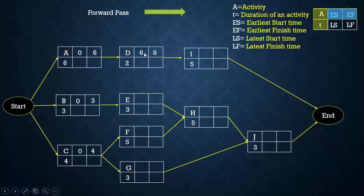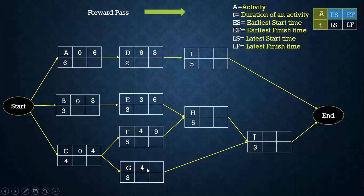The earliest finish time of D is 6 plus the duration of activity D, which is 2, giving 8. For activity E, it needs B to complete, so the earliest start time is 3, and the earliest finish time is 3 plus 3, which is 6. For activity F, the earliest start time is 4 because it needs input from C and must wait until C is complete. The earliest finish time of F is 4 plus 5, which is 9. For activity G, it also needs input from C, so its earliest start time is 4, and earliest finish time is 4 plus 3, which is 7.